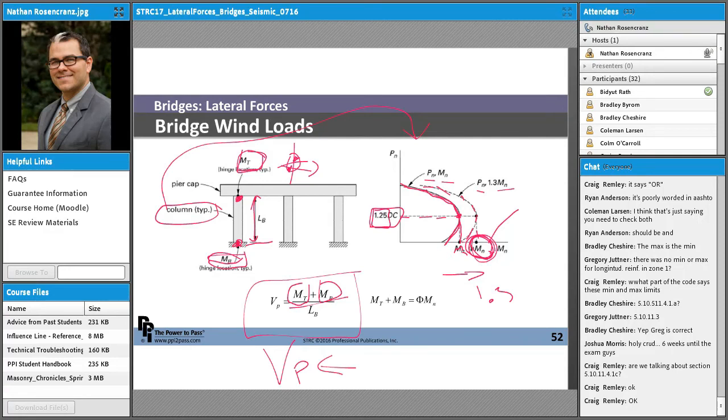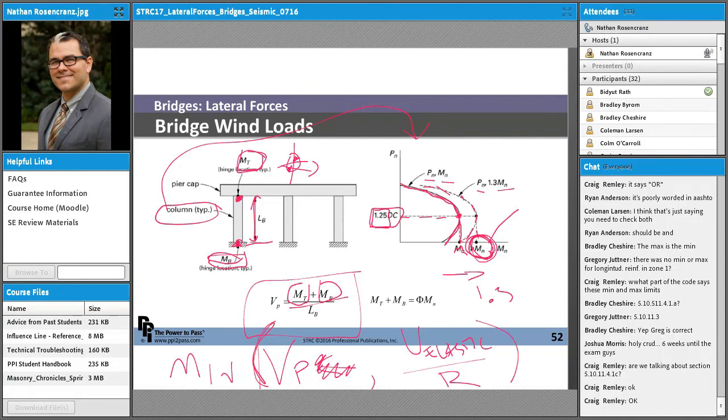So that's a procedure for calculating your plastic shear force. And then you would compare this with your V elastic over R. And you take the minimum of your V plastic there or your V elastic over R. And that would end up being then your seismic design shear would be the minimum of those two.